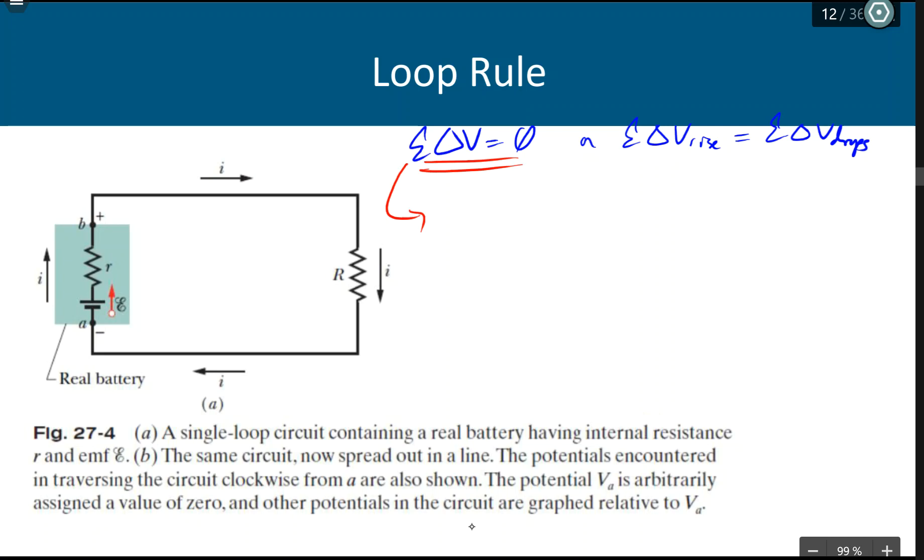So I'm going to go ahead and use that one. And either one that you use, you should get the same formula. So the sum of all the potential differences, depending on which way you're going. Now, if you look at all the directions of the current, you can clearly see that we're actually going clockwise from directions there.